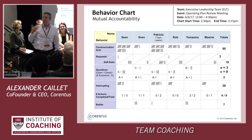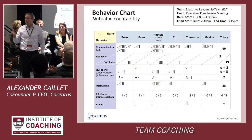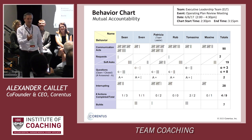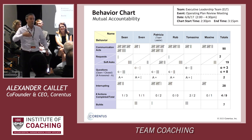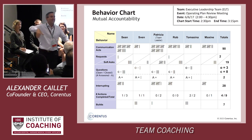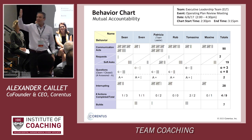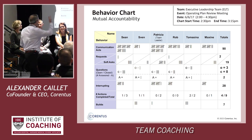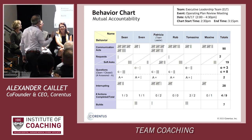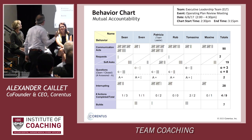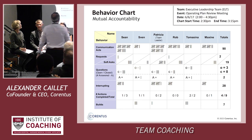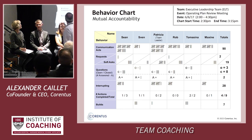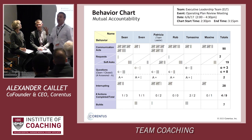Now we deliver it neutrally and we deliver it generically. We say, here's what we're noticing in the team — this many with percentages. For example, 90 communication acts, out of which we counted about a total of three questions.